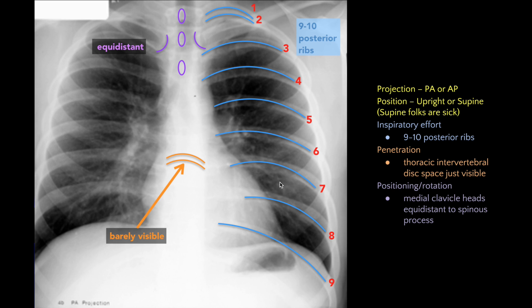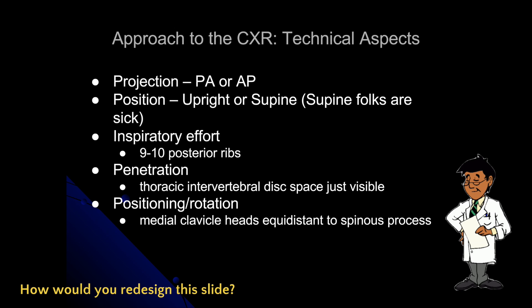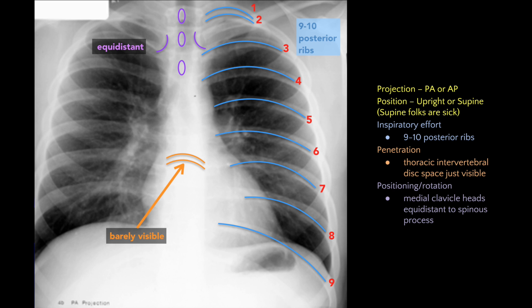For penetration, you want to see that the disc spaces between the vertebrae are just barely visible — and they're barely visible here. To judge rotation, you want to see that the clavicles are about equidistant from the spinous processes. This slide, spoken over, is going to be more powerful than the original text-heavy one, because we're applying the multimedia training principles.